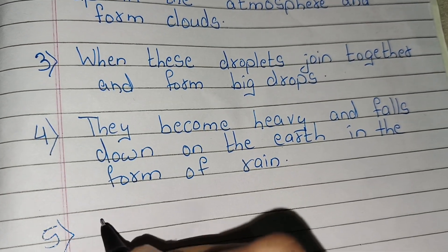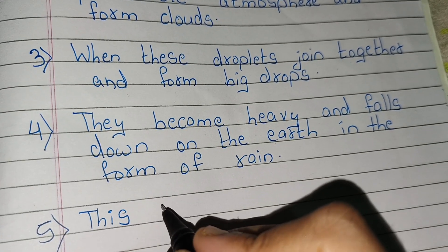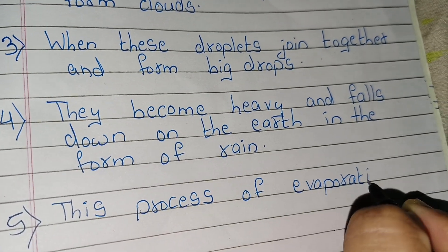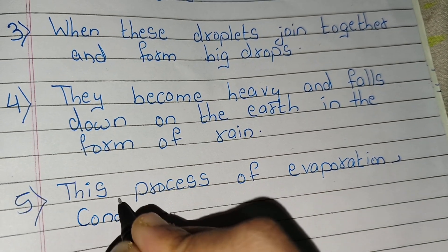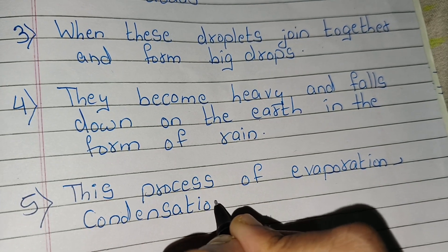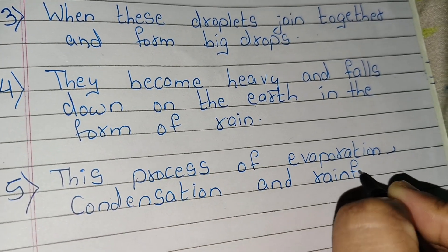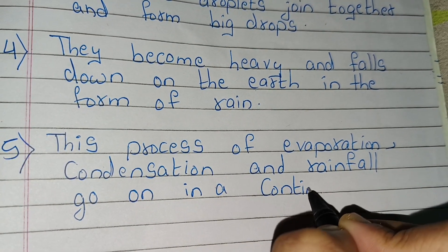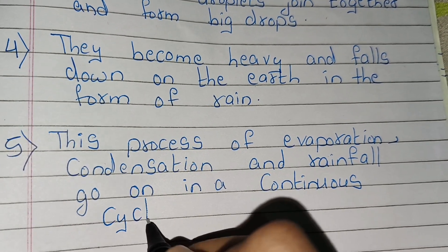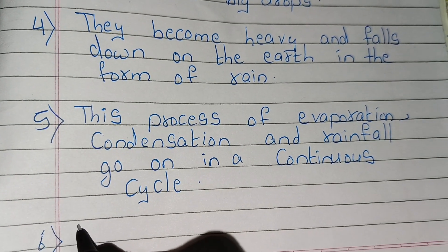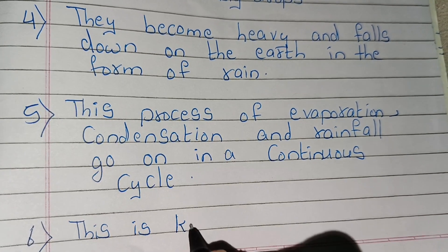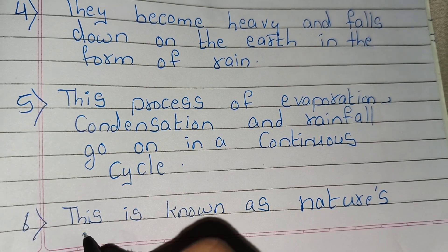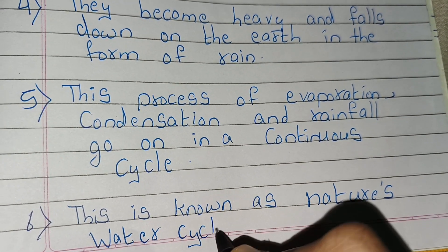This process of evaporation, condensation and rainfall go on in a continuous cycle. This is known as nature's water cycle. Thank you friends.